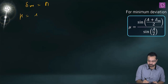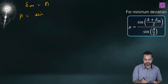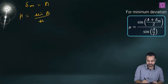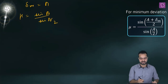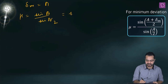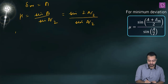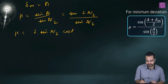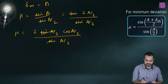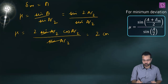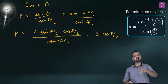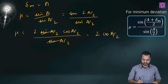The condition is δ_m = A, so μ = sin((A + A)/2) / sin(A/2) = sin(A) / sin(A/2) = sin(2 × A/2) / sin(A/2). Using sin(2θ) = 2 sin(θ)cos(θ), this becomes μ = 2 sin(A/2) cos(A/2) / sin(A/2) = 2 cos(A/2). So we have a simple relationship: μ = 2 cos(A/2).